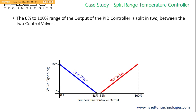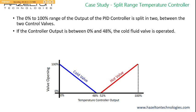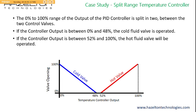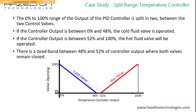The 0% to 100% range of the PID controller output is split between the two control valves. If the output is between 0% and 48%, the cold fluid valve is operated — fully open at 0% and fully closed at 48%. If the output is between 52% and 100%, the hot fluid valve is operated, starting to open at 52% and fully open at 100%. There is a dead band between 48% and 52% where both valves remain closed, to prevent seat wear from the controller constantly switching between the two valves.